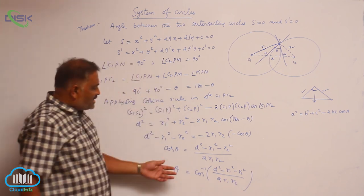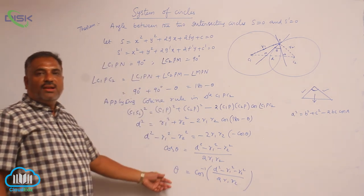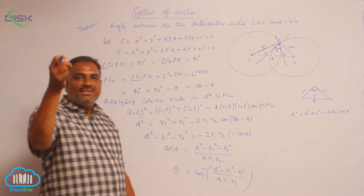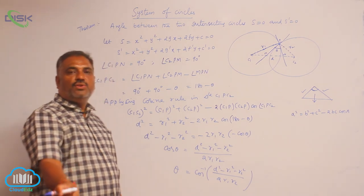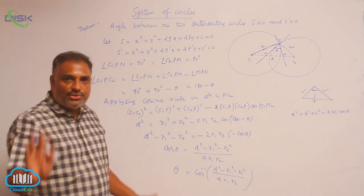This is how we calculate the angle between the two intersecting circles S = 0 and S' = 0.